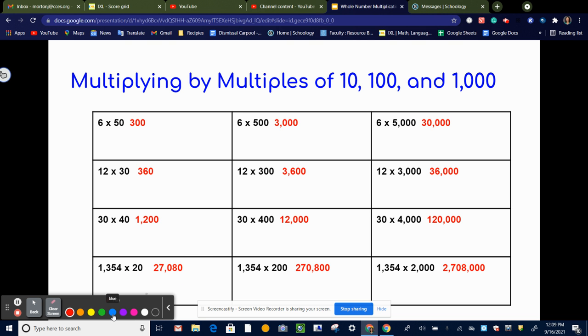So one thing you can do is write out your first number, which would be 1, 3, 5, 4. And you can take your number that has the zeros in it, put it on the bottom, and line it up just like this.